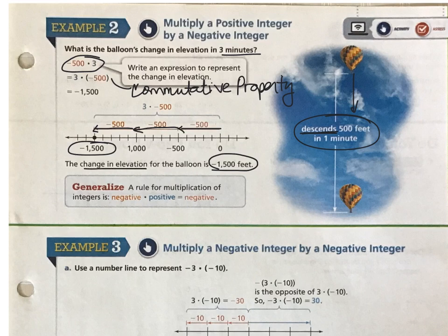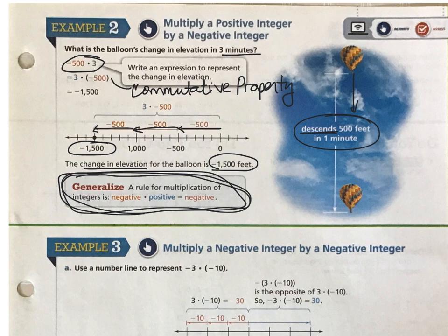And we end up at negative 1,500 feet. In other words, that is the change in elevation. It's not exactly where the balloon is. You can't be at negative 1,500 feet unless you are underground. So this just indicates that we are dropping 1,500 feet in those 3 minutes. Again, we have a generalized rule right here that tells us more about multiplication with negative and positive integers. So a negative number times a positive number is still a negative answer. So any time you have one of each type of number, one positive and one negative, the answer will always be negative.